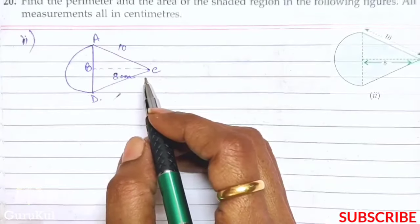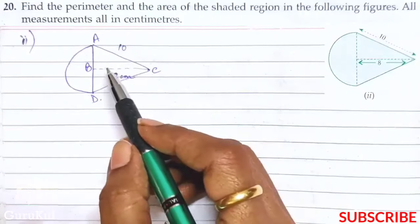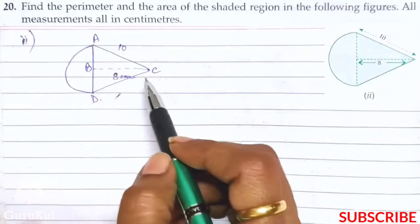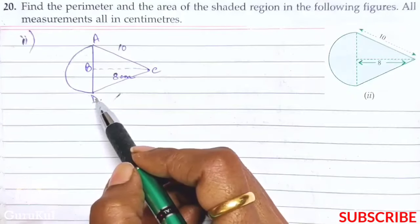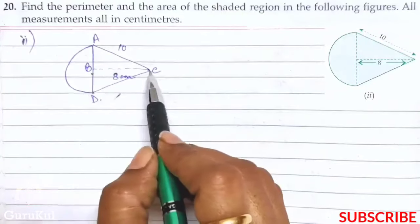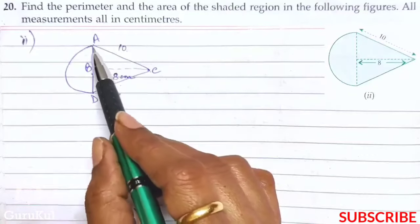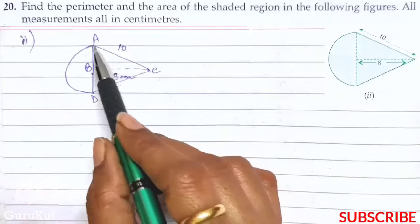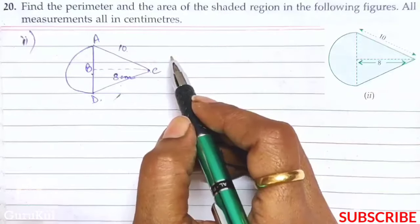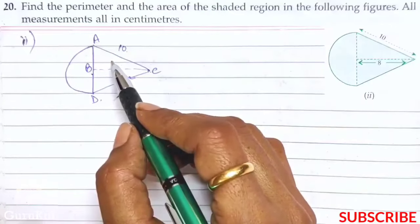Next, we need to find the area as well as the perimeter of this given figure. If you look carefully, this is the combination of a semicircle and a triangle. In this triangle, the length BC is 8 and AC is 10. So we are forming a triangle A, B and C, and here we will find the measurement of AB through the Pythagorean property.